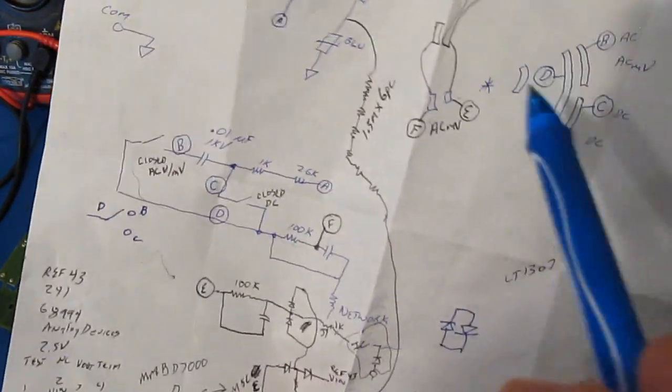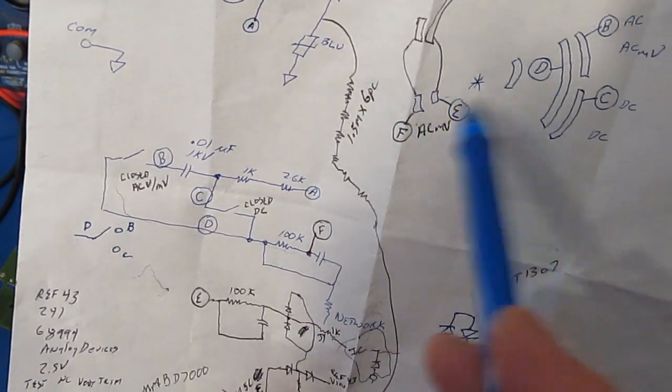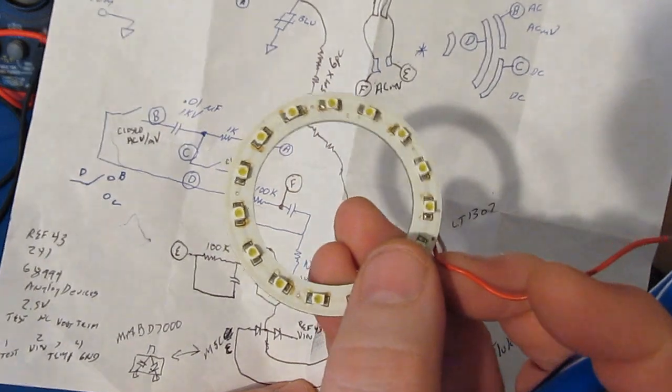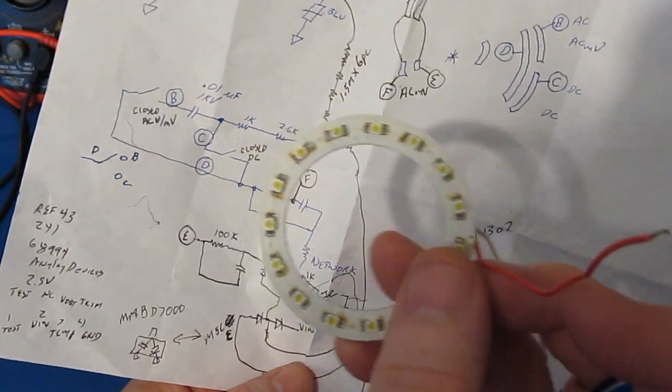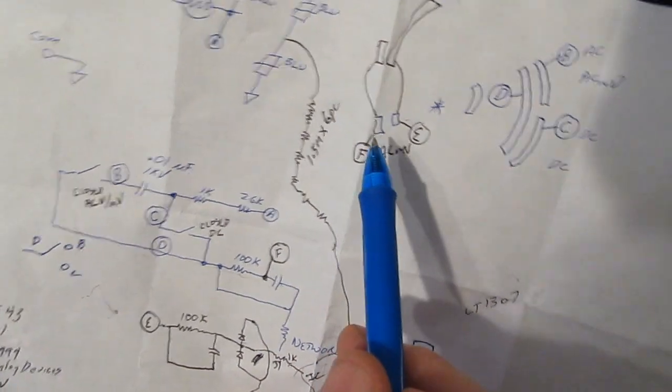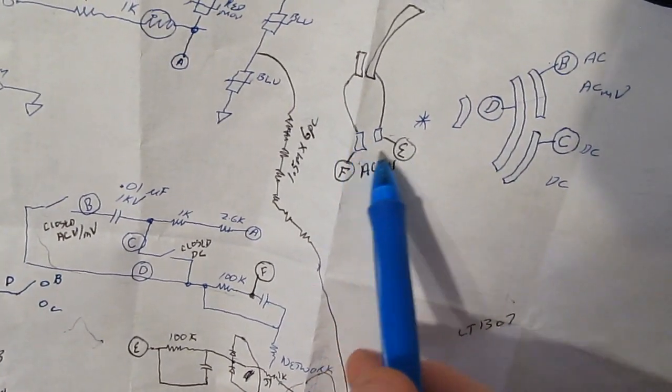What's happening here is now we're in the AC volt mode, so this switch is open. So what ends up happening is our path, instead of going through this direction, is now going through our high impedance resistive network.